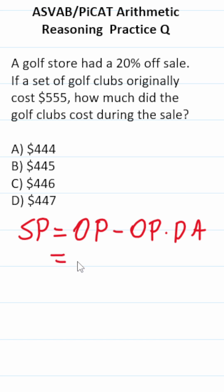Well, we know the original price of this set of golf clubs was $555, so that's going to be $555 minus $555 times the discount amount.